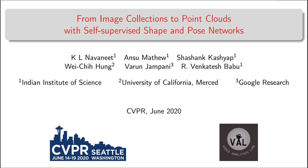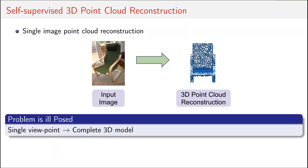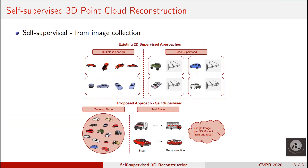We present our paper on single image 3D point cloud reconstruction. Given just a single image from a random viewpoint, the task is to reconstruct the complete 3D model of the object. Most existing approaches utilize either 3D data or multiple 2D projections of each 3D model in the training stage. The key contribution of our work is to utilize just a collection of images and corresponding silhouettes with just one image per 3D model to achieve the task.